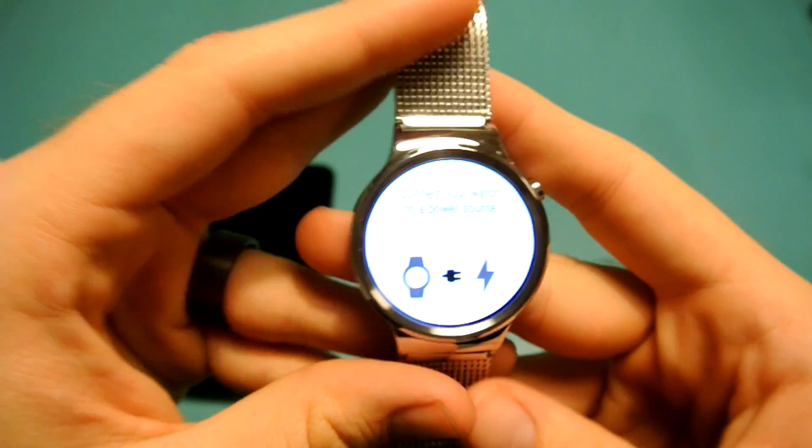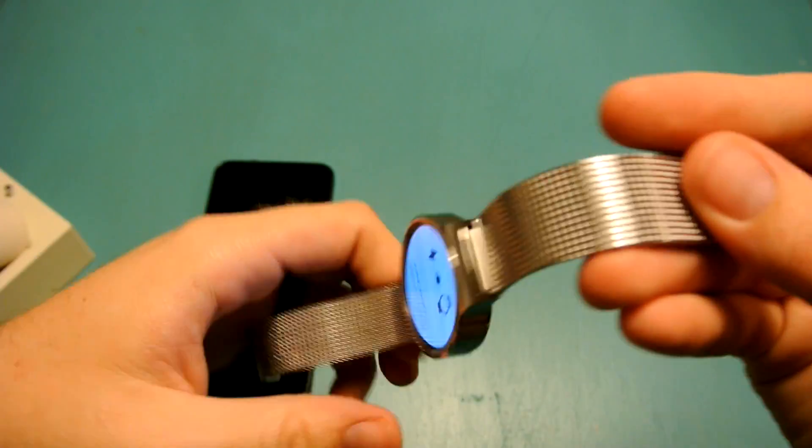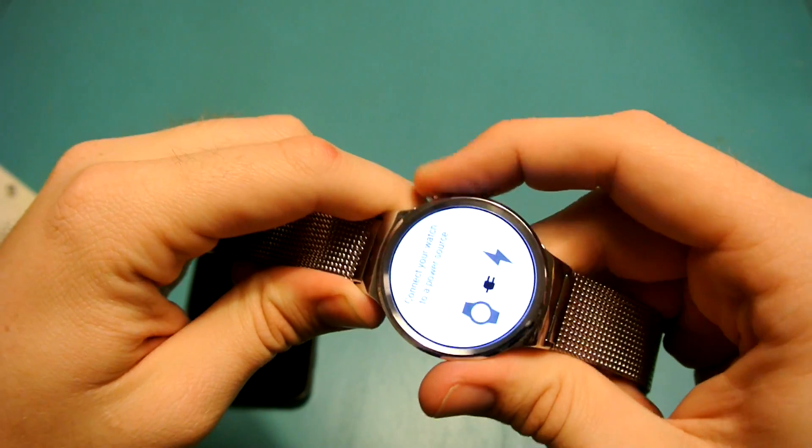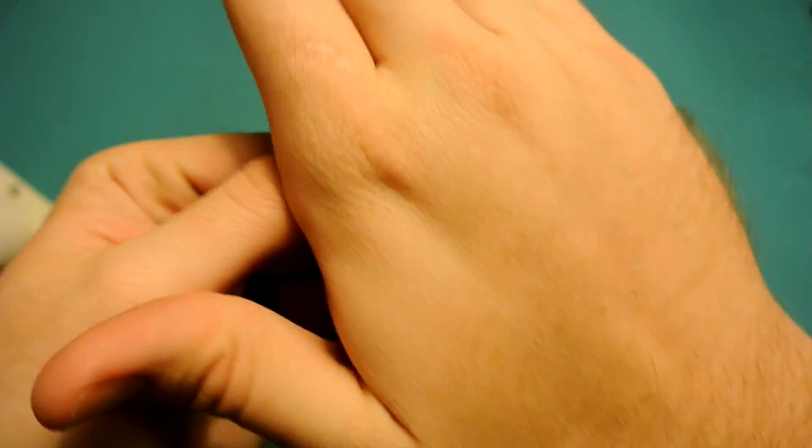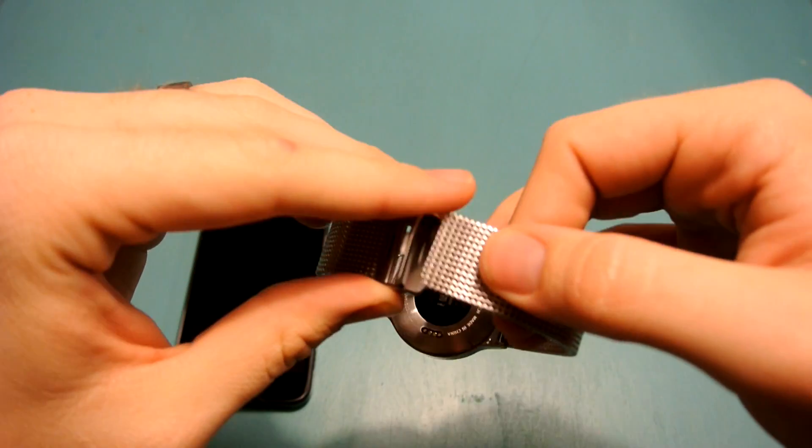So we'll go ahead and select English. It's asking us to connect to a power source like it always does. But let's go ahead and take a look. So there is no ambient sensor, obviously, because that's usually where the flat tire would house it. So if you cover up with your wrist, it will shut off. I'm getting very, very solid battery life with this, by the way.